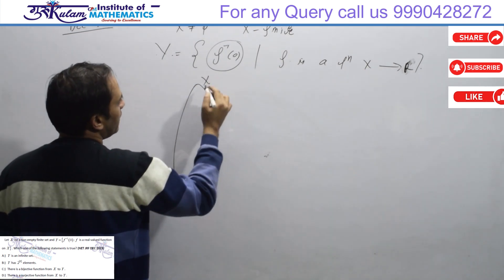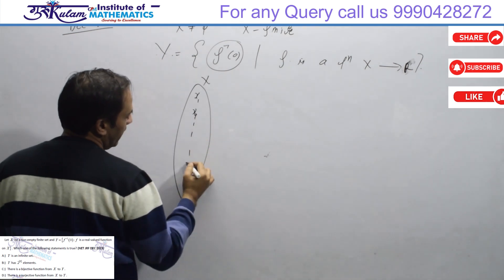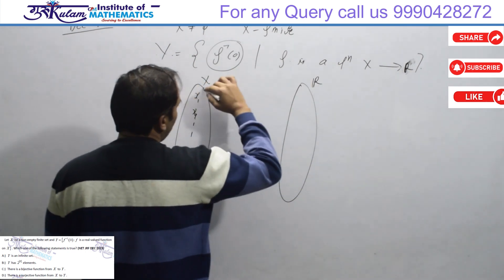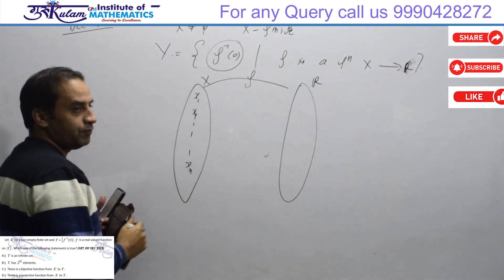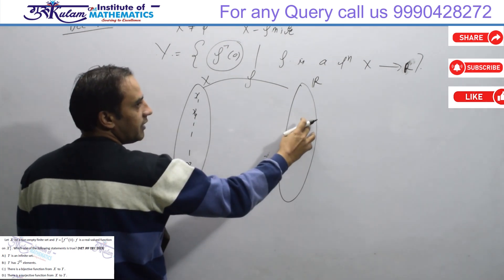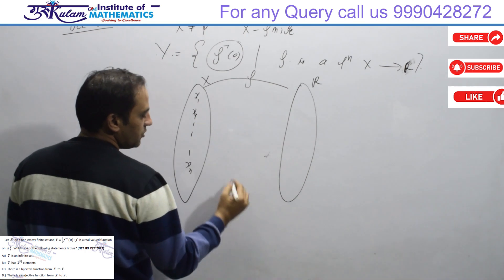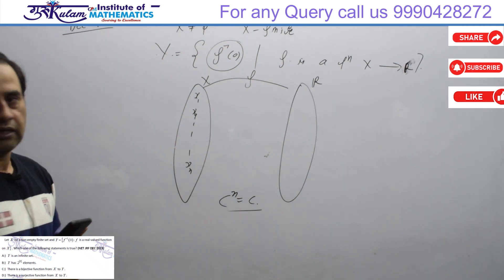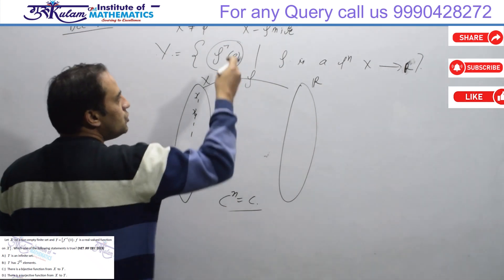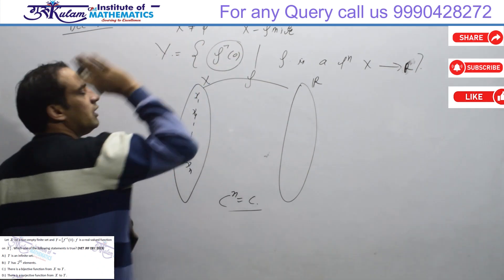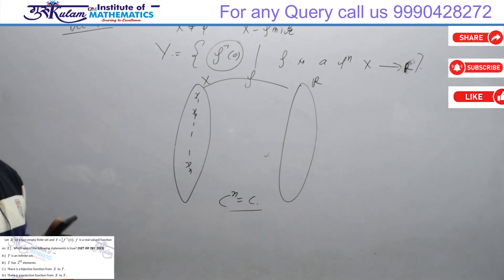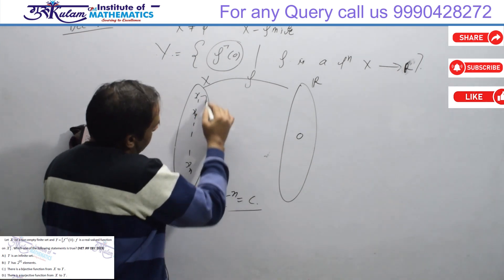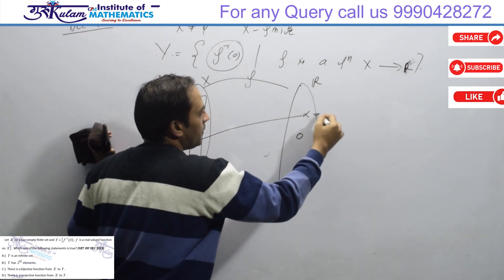X is a finite set: x1, x2, up to xn with n elements. This set maps to R. Which functions are possible? There are C to the power n, uncountable number of functions. In all these functions, which give 0 is the collection which is Y.